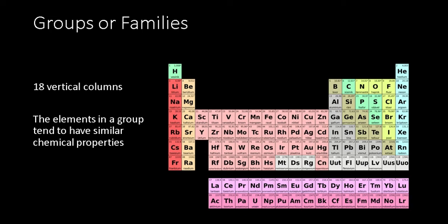The periodic table has 18 vertical columns called groups or families and 7 horizontal rows called periods. We're going to talk about groups today. The elements in a group tend to have similar chemical properties.